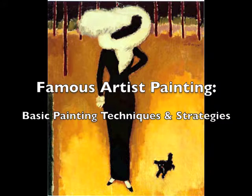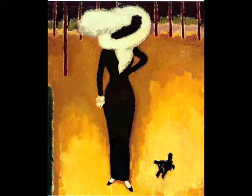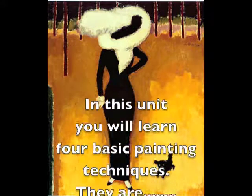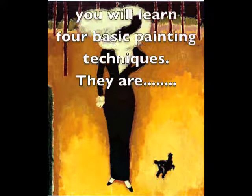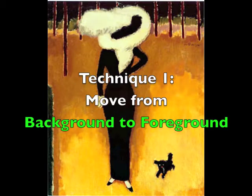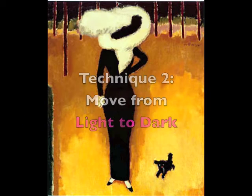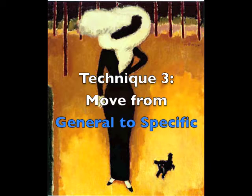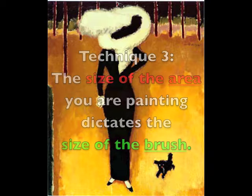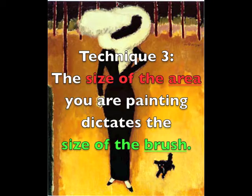Welcome to the Famous Artist Painting Unit. There are many different painting techniques and strategies. In this unit you will learn four basic painting techniques: move from the background to the foreground, move from light to dark, move from the general to the specific, and let the size of the area you are painting dictate the size of the brush that you use.